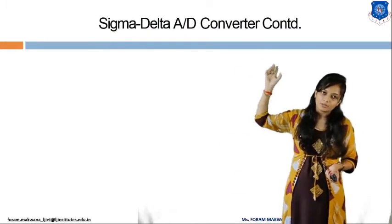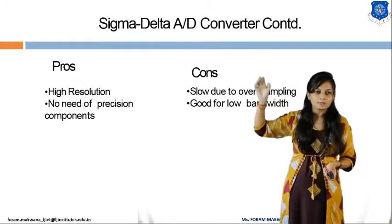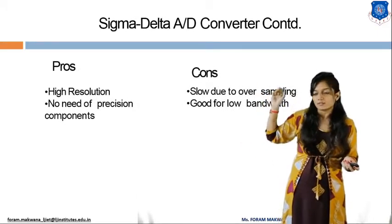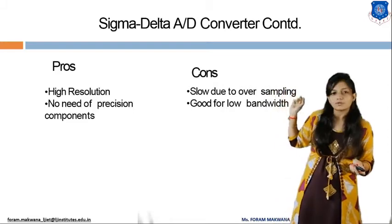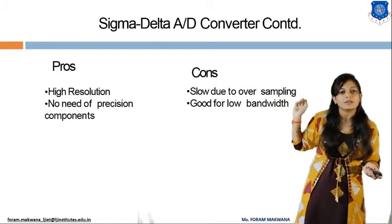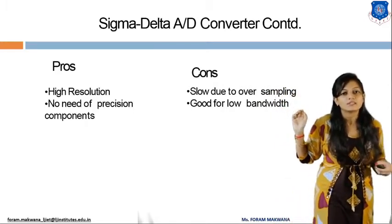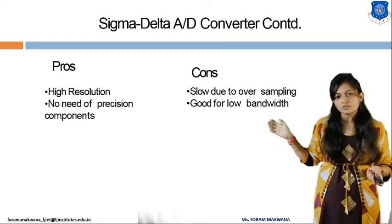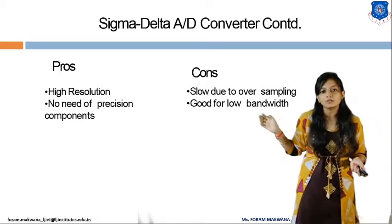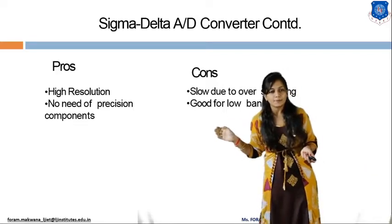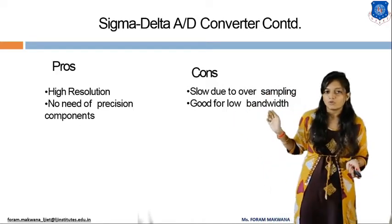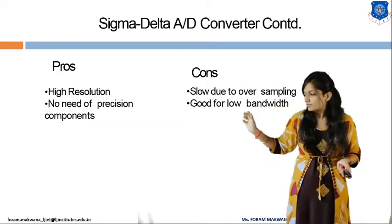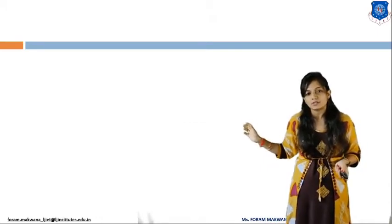The sigma delta ADC has higher resolution but slower speed — it does not respond instantly when an input signal is applied. It can be used for low bandwidth applications and does not require any precision components.